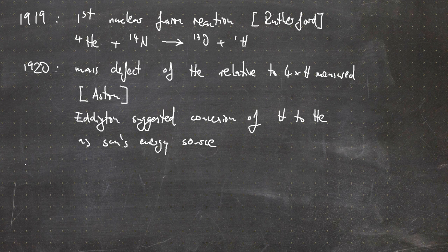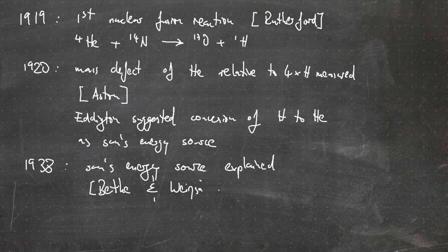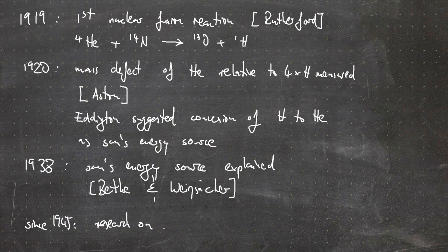Eddington was also known as one of the greatest theoreticians of his time. It took a while before the sun's energy source was actually explained — that was in 1938, by Bethe and Weizsäcker. We will come to that in detail in one of the next videos. After World War II, fusion research really started to kick off, and at first it was all about research on pinches.